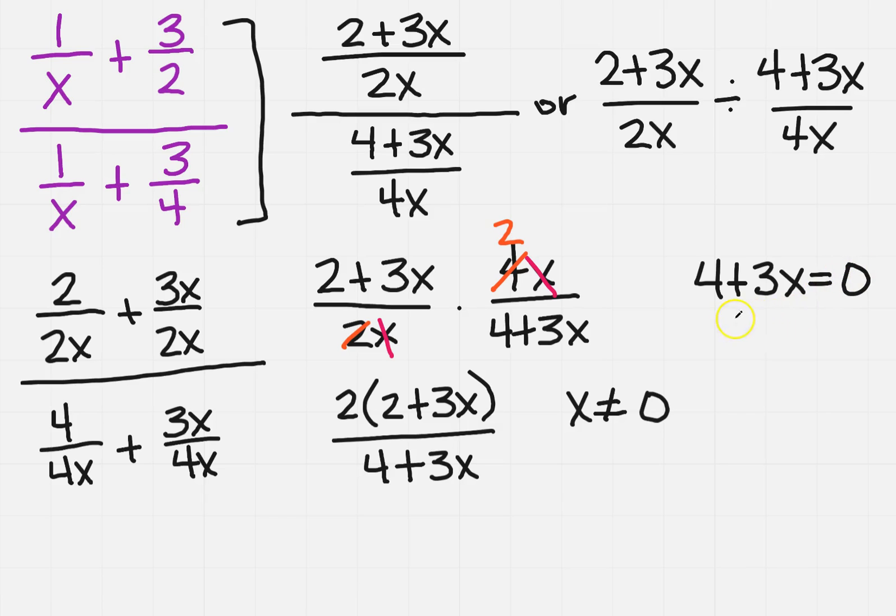3x equals 0. I'm going to subtract 4 from both sides, so 3x equals negative 4. But I want x all by itself, so I'm going to divide both sides by 3. So x can also not be negative 4 thirds.